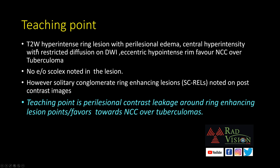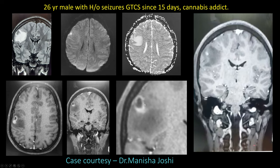The teaching points: T2 hyperintense ring-like lesions with perilesional edema, central hyperintensity with restricted diffusion on DWI, and eccentric hyperintense rim favor NCC or tuberculoma. However, no scolex is noted in this case. There are solitary conglomerate ring enhancing lesions on post-contrast images. While conglomerate ring enhancing lesions are commonly associated with tuberculomas, they can also occur in NCC. The key teaching point is the perilesional contrast leakage around the ring enhancing lesion, which favors NCC over tuberculoma.